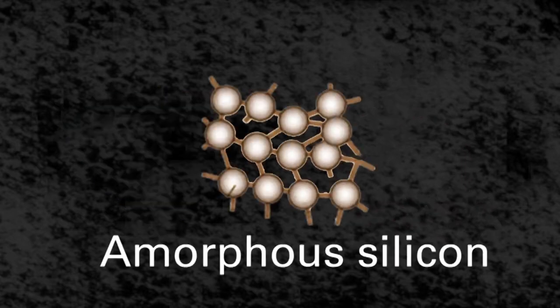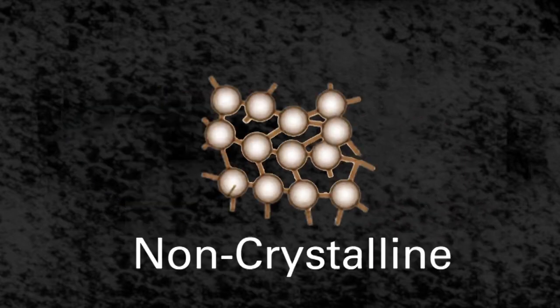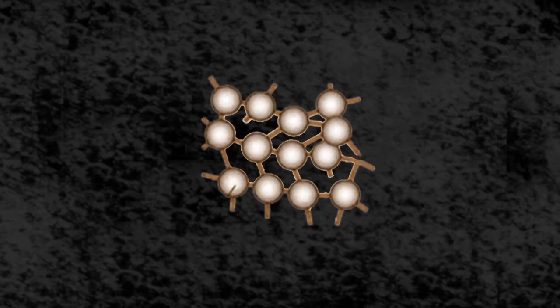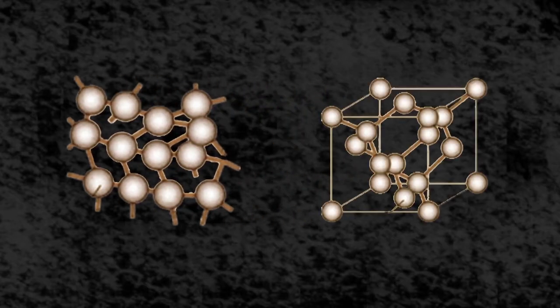Amorphous silicon is non-crystalline silicon. In this structure, the silicon atoms are not held together tightly like in crystalline silicon.